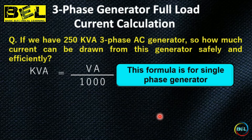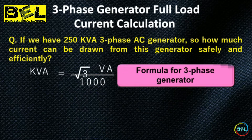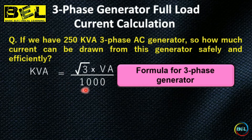For a three-phase AC generator, the formula changes with the inclusion of √3 (under root three). The formula becomes: kVA = √3 × V × A / 1000. That is the formula for a three-phase AC generator.